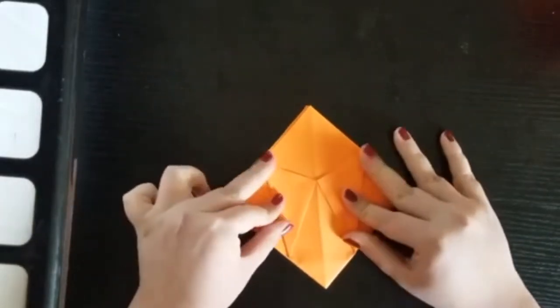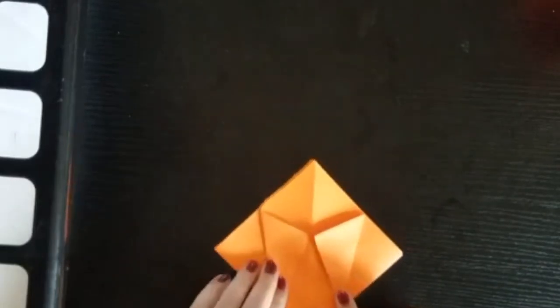Now you're going to take the flap on the opposite side and match it up with the corner of your first side.